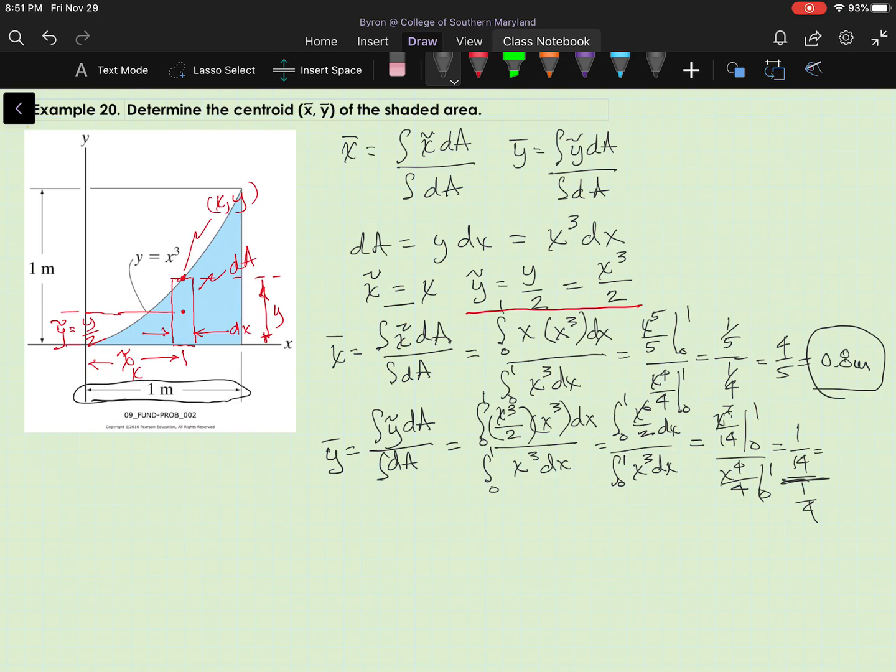and you do that math and you get 0.2857 meters for y bar. So let's rewrite that. I have x bar equals 0.8 meters, y bar equals 0.286 meters.